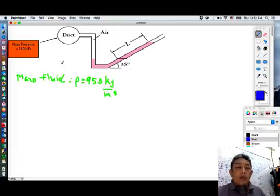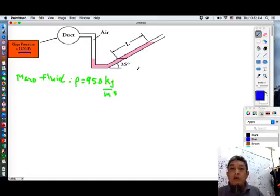The pressure inside this duct is 1200 Pascal and the manometer sits on an incline surface of 35 degrees. So, we are asked to find what is this length L.